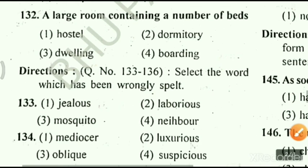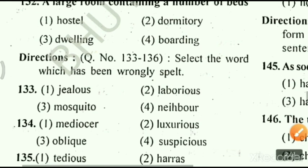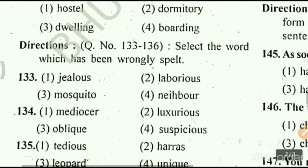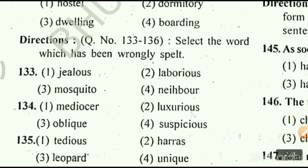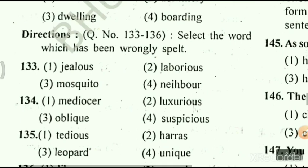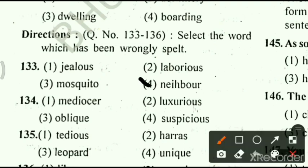We move to our next part. From question number 133 to 136, we have to select the word which has been wrongly spelled. Question number 133 options are: option A, jealous; option 2, laborious; option 3, mosquitoes; option 4, neighbor. The right answer for this question is option number 4, neighbor.